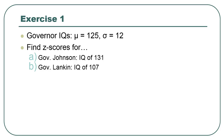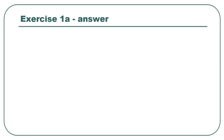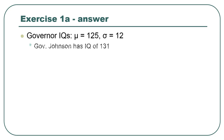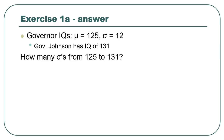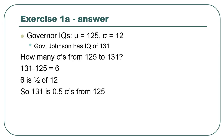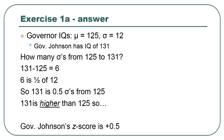Governor Johnson has an IQ of 131. To find the z-score, how many standard deviations are there between 125 and 131? The difference is six IQ points, and the standard deviation is 12. Six is just half of 12, so 131 is half a standard deviation from 125. It's higher than 125, so the z-score is positive 0.5.